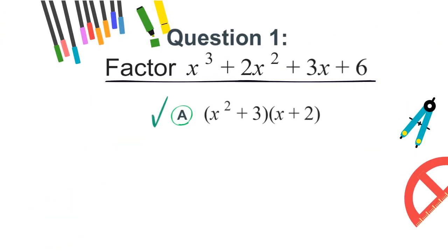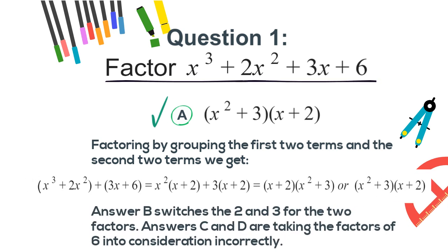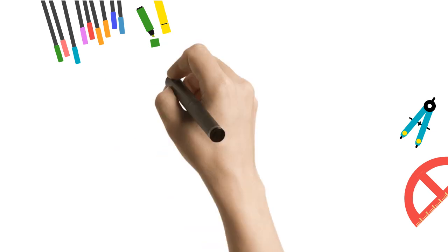The correct answer is a. x squared plus 3 times x plus 2. Factoring by grouping the first two terms and the second two terms, we get the following. Answer b switches the 2 and 3 for the two factors. Answers c and d are taking the factors of 6 into consideration incorrectly.